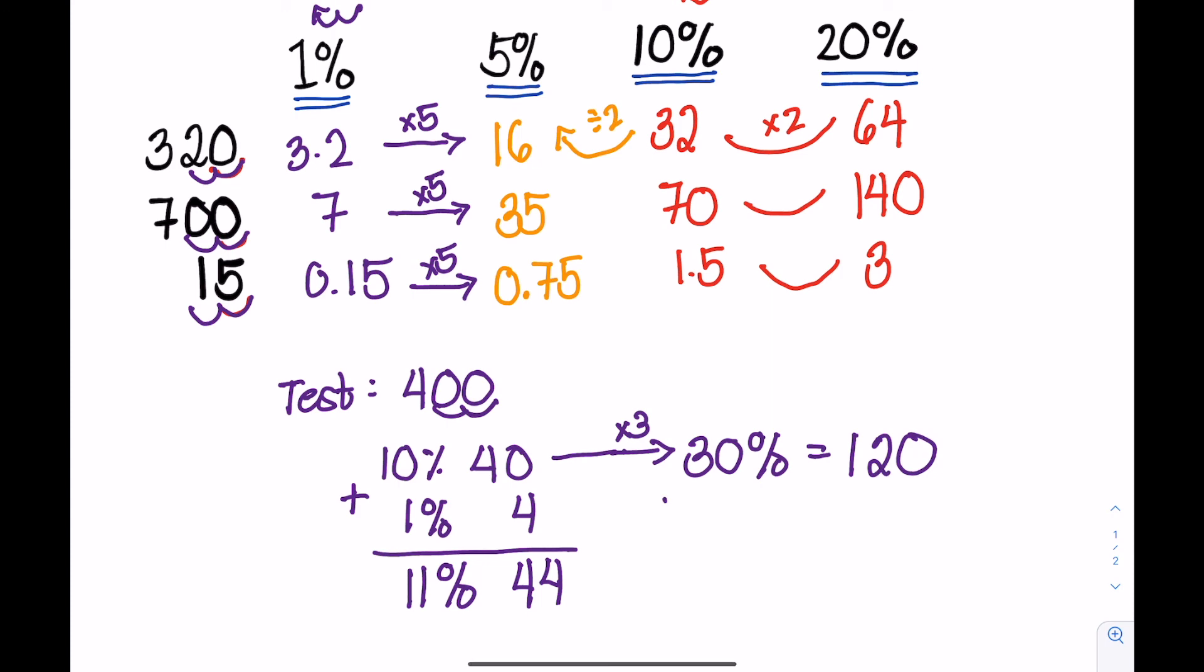Now what if we want to get the 32%? 32% is a combination of 30% added to 1% and another 1%. And that is 120 plus 4 and plus 4. So that is 128.